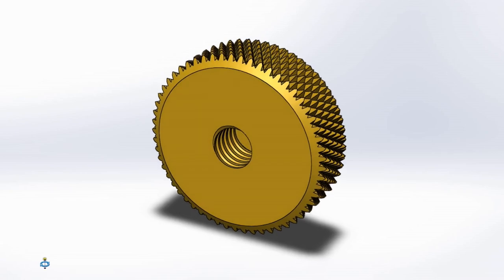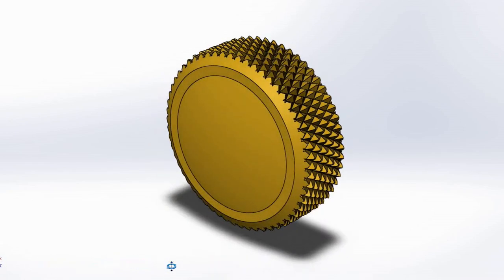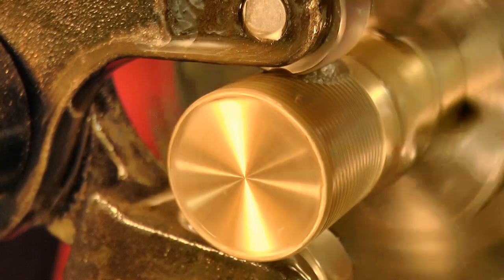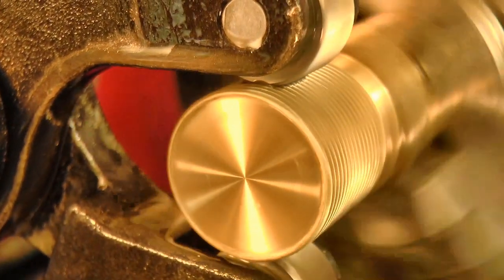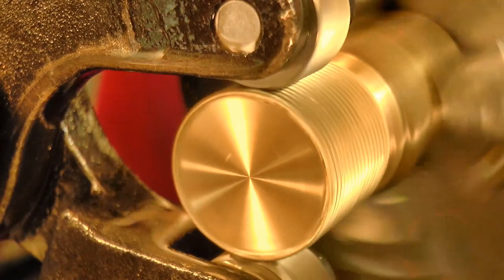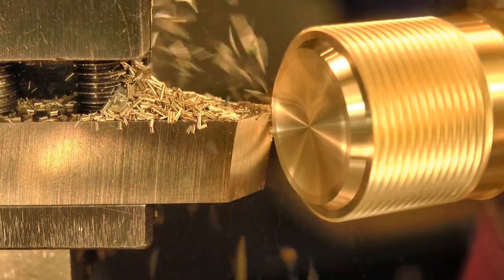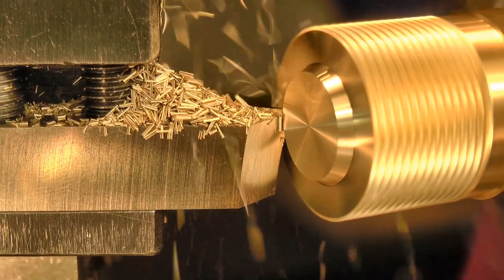Now for the lifting screw thumbwheel. This one was made very much like the clamping nut. I started with the knurl, trimmed off the end, and then drilled and threaded the center.